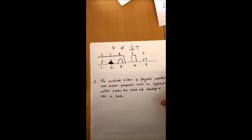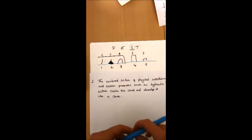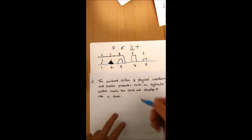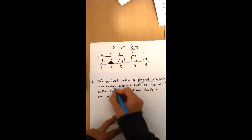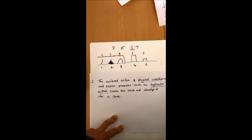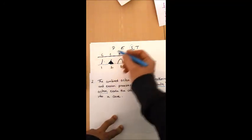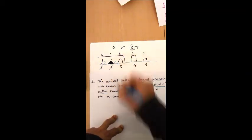The combined action of this physical weathering and erosional processes such as hydraulic action can eventually erode the crack and develop it into a cave. So again, we've got our processes in here, we've mentioned the physical weathering, but we've also now talked about things such as hydraulic action, so we're making sure that we've got the correct terminology and processes in there, and we're showing that sequence. We can start crossing off here. We've talked about the crack, and now we've talked about the cave.